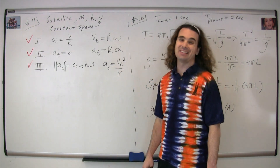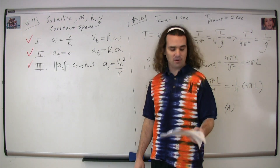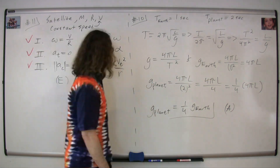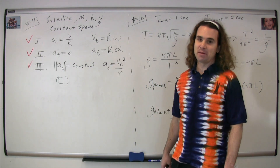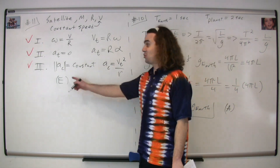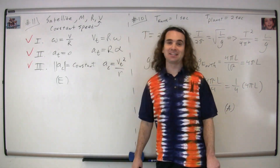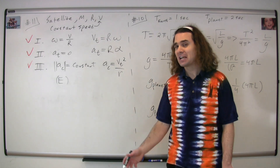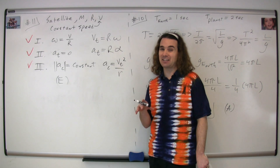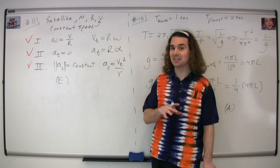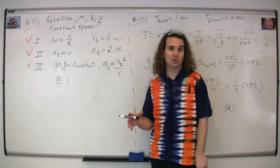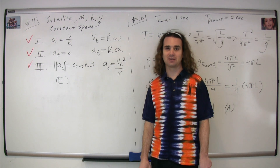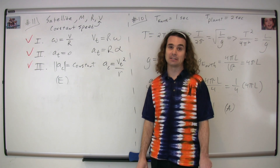The correct answer then is that all three are correct, and the correct answer is E. I do think it would have been more interesting if they took off the 'magnitude' part for centripetal acceleration, because the centripetal acceleration itself is actually not constant — the direction is changing the whole time — but the magnitude of the centripetal acceleration is constant.